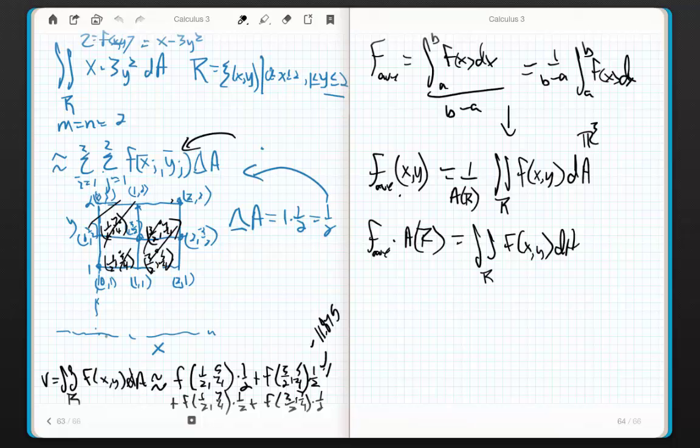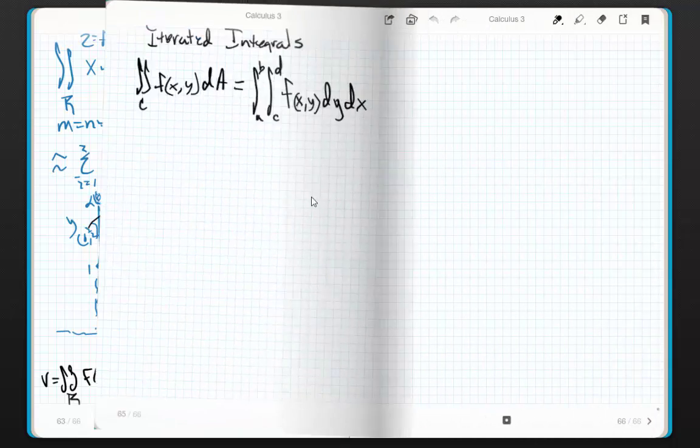I want to do the integral from 0 to 2 and 1 to 2 of x minus 3y squared. Okay, cool. So let's do that guy.